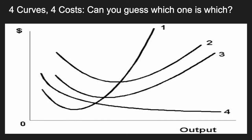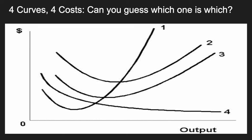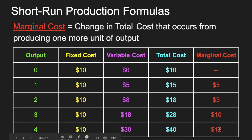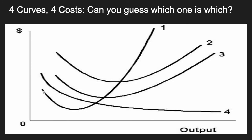As we put all of these together on a graph, we can start to think about how they interact. You've got four curves: marginal cost, ATC, AVC, and AFC. See if you can match curves 1 through 4 with each of these. Curve 1 is marginal cost — it starts a little bit higher, swoops down, reaches a low point early on, and then drastically starts to come back up. That's what we saw: 5, 3, then 10, 12. It starts a little bit higher, comes down, and then because of diminishing returns, swoops back up. That's marginal cost.